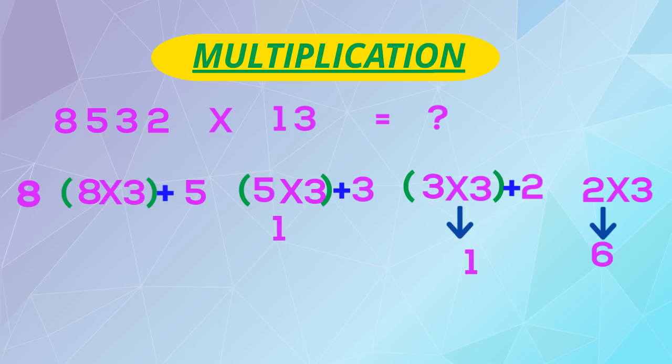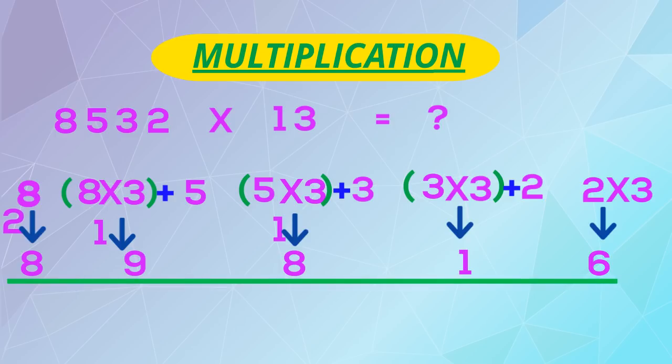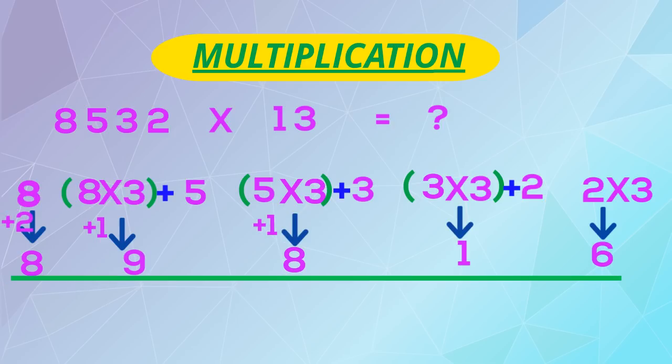2 into 3 is 6. 3 into 3 plus 2 is 11, one we will write and another one will go as carry over. 5 into 3 plus 3 is 18, 8 comes down, 1 as carry over. 8 into 3 plus 5 is 29, 9 comes down, 2 carry over. 8 will come down.